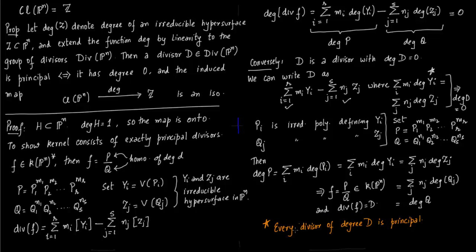So every divisor of degree D equal to zero is principal. And we can use the same principle and the same argument to show that this class of this product P_1^N_1 times P_2^N_2, all the way to P_R^N_R, is nothing but R copies of Z.